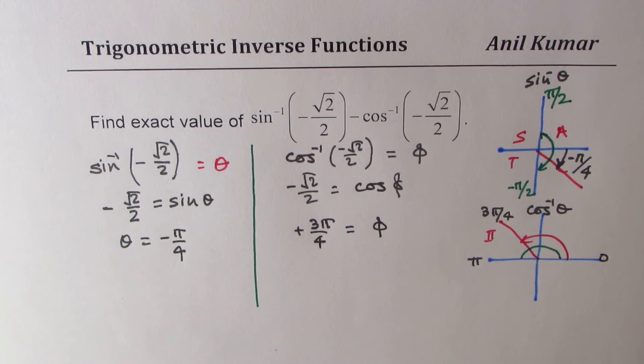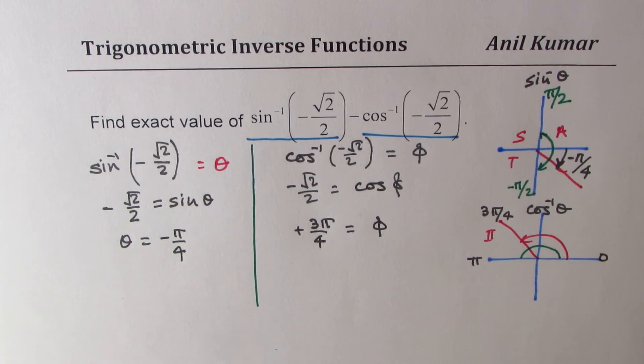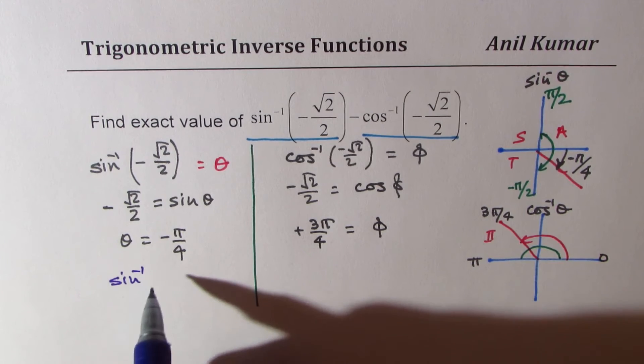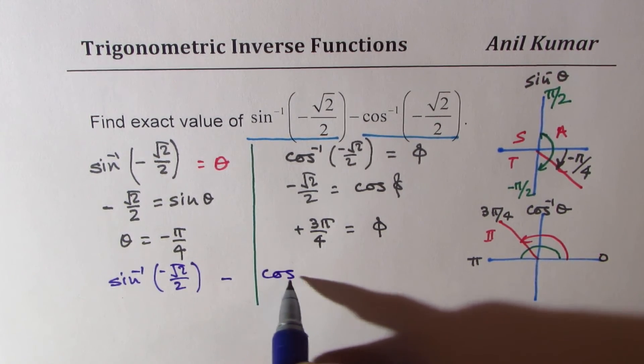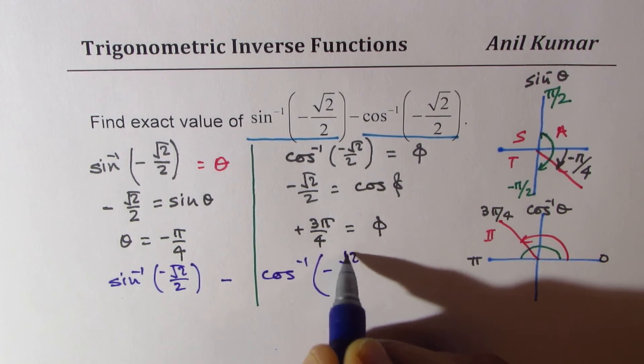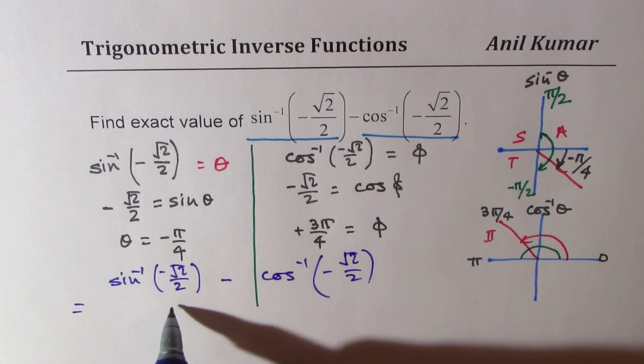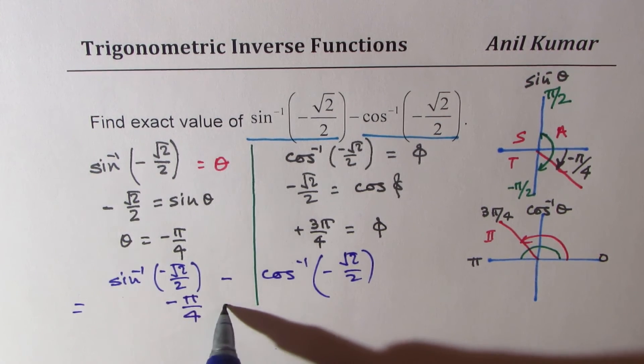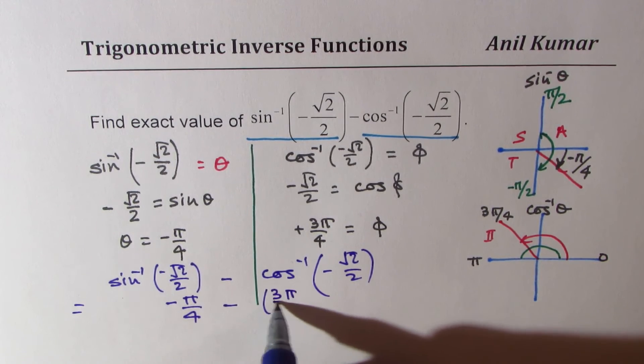So what we have got to this stage is that we know what is sine inverse and what is cos inverse. Now we can substitute these values and find our answer. So we can write down that sine inverse of minus square root 2 over 2 minus cos inverse of minus square root 2 over 2 is basically equal to minus pi by 4. So this is minus pi by 4. Negative cos inverse is plus 3 pi by 4.